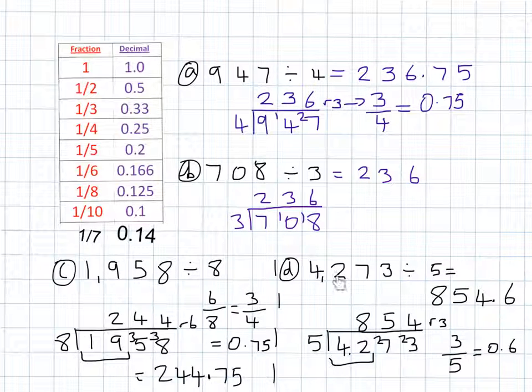The final question was 4,273 divided by 5. The answer is 854 remainder 3. 1 fifth is worth 0.2, so 3 fifths will be worth 0.6. So the final answer is 854.6.